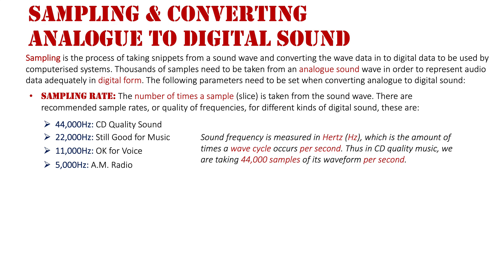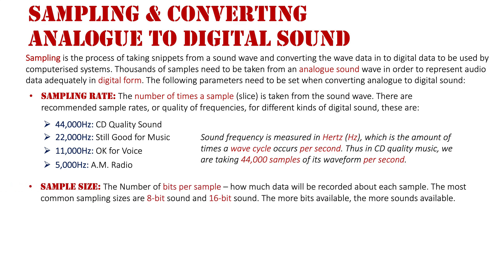Sound frequency is measured in hertz, which is the number of times a wave cycle occurs per second. In CD quality music, we are taking 44,000 samples — 44,000 pieces of data from a waveform per second. That's quite a lot, because songs don't go for just one second — they go for much longer — but that's how much data we're getting per second.